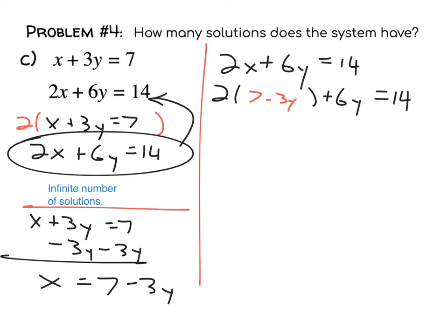And now I'm going to distribute. 2 times 7 is 14, 2 times negative 3y is negative 6y, and plus 6y equals 14. Now I've got to combine like terms. This is a y term and this is a y term, so I'm going to combine them. 14, negative 6y plus 6y is 0, so it just leaves you with only the 14 equals 14.